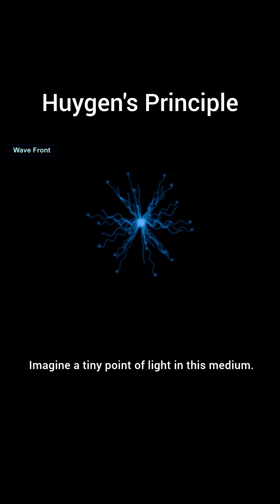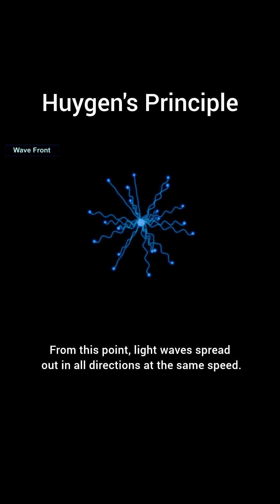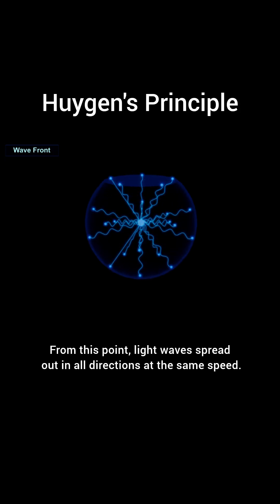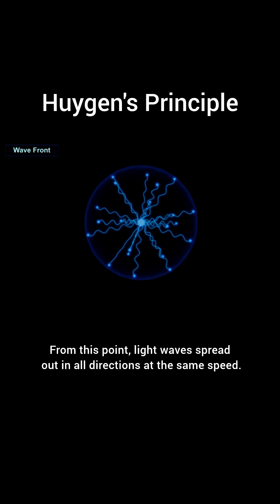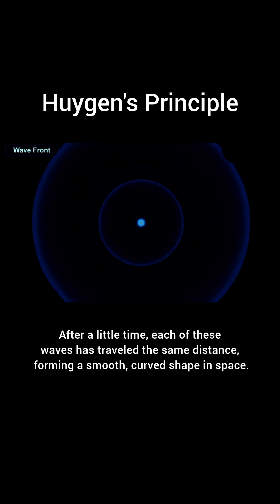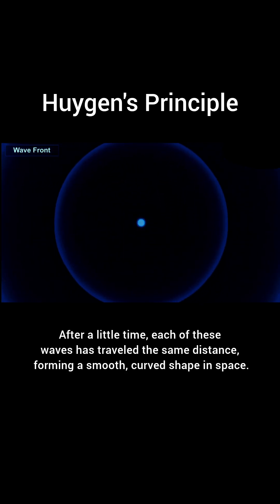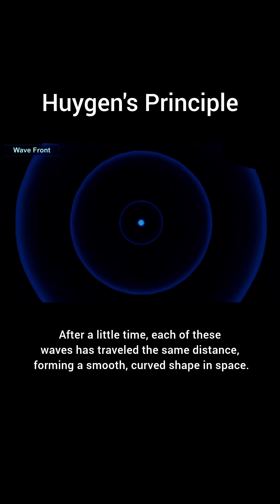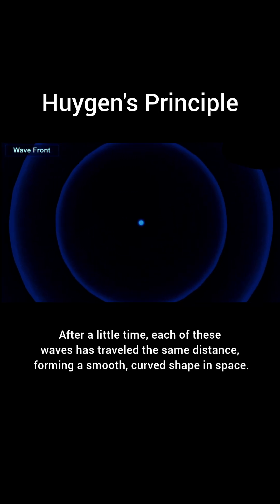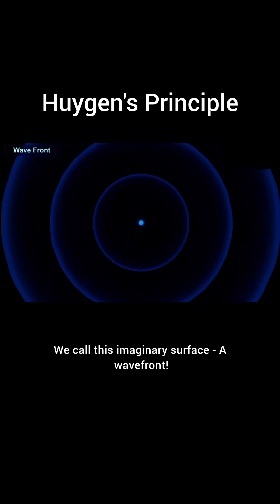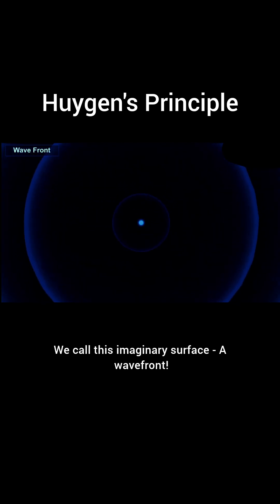Imagine a tiny point of light in this medium. From this point, light waves spread out in all directions at the same speed. After a little time, each of these waves has traveled the same distance, forming a smooth, curved shape in space. We call this imaginary surface a wavefront.